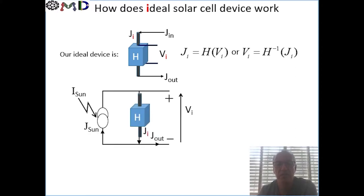This would often be called the dark characteristics. And then we say that if we have light shining on the device, then this light will create an equivalent current source that will flow in this system, which in this case — where we have only the current source and the device itself — flows in a closed loop and can create an external voltage.